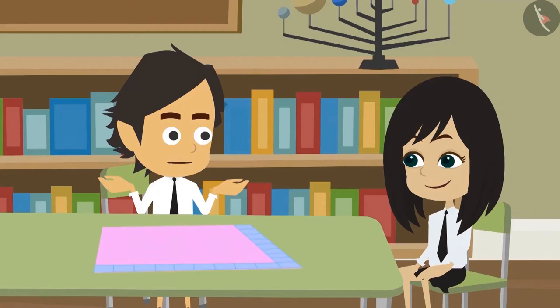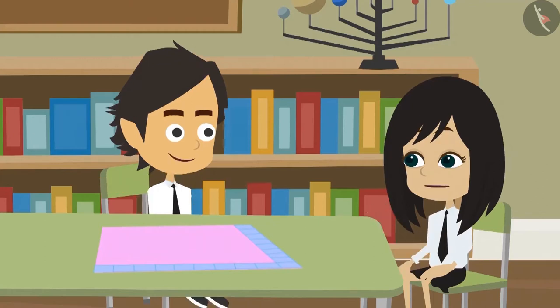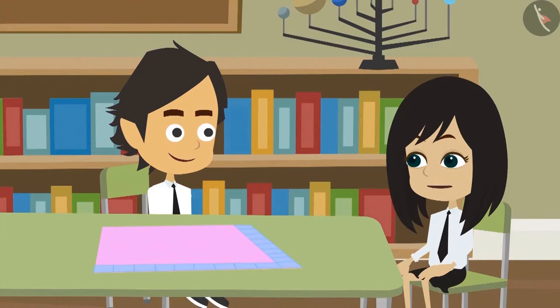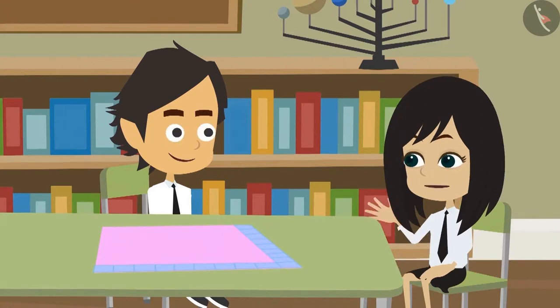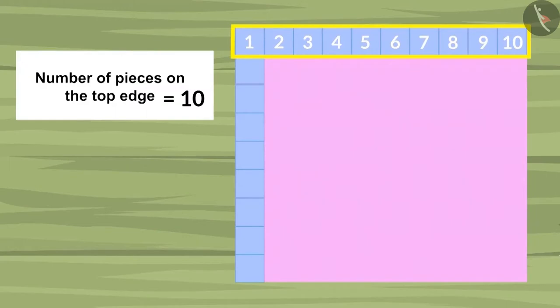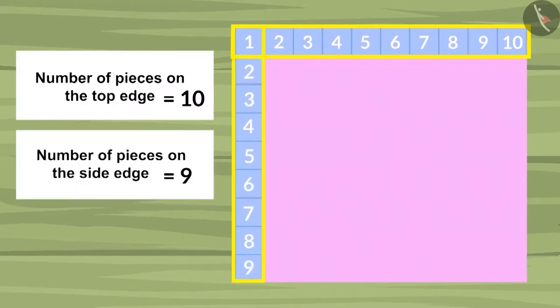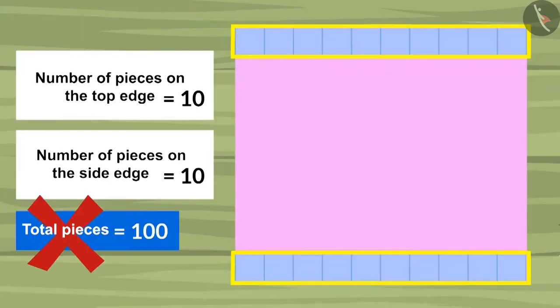What difference does it make? It will make a difference now. Let's multiply the number of pieces placed on top by the number of pieces placed on the side. 10 pieces are placed on the top and 9 pieces are placed on the side. And multiplying these numbers will give us result 90.